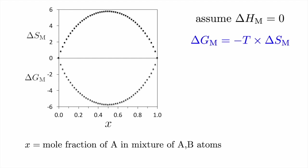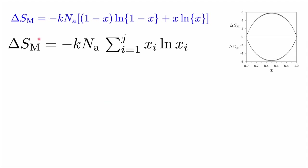So far we have only looked at a binary system, and we need to generalize the expression for the entropy of mixing to a multi-component system where we may have more than just two components. Here is our entropy of mixing for a binary solution, and generalizing is very easy — we simply write the change in entropy of mixing as the sum of all terms x_i·ln(x_i), where x_i is the concentration of whatever element we have added into the mixture.